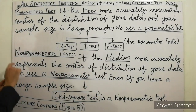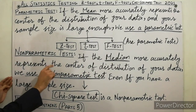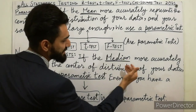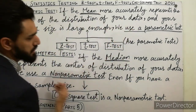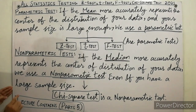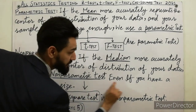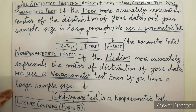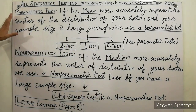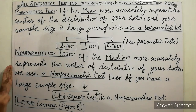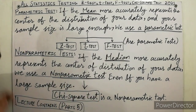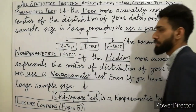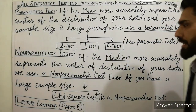For non-parametric test: if the median more accurately preserves the general distribution, and even if you have a large sample size, you use non-parametric test. Must remember that the chi-square test is the non-parametric test.